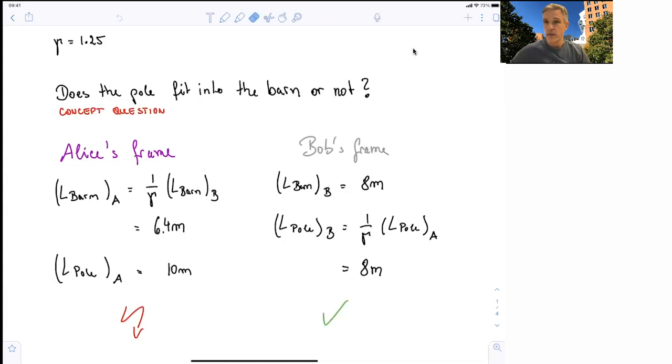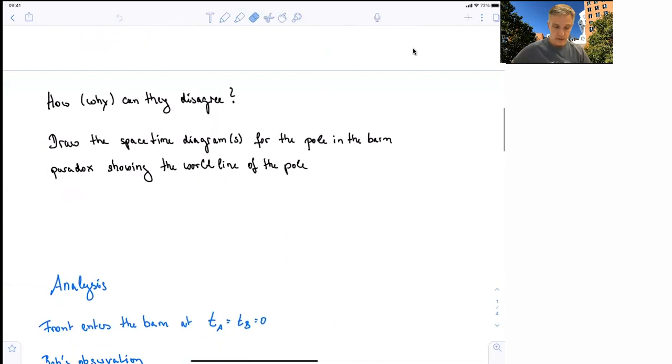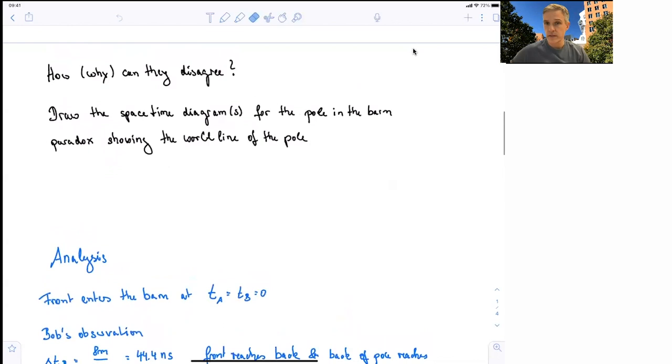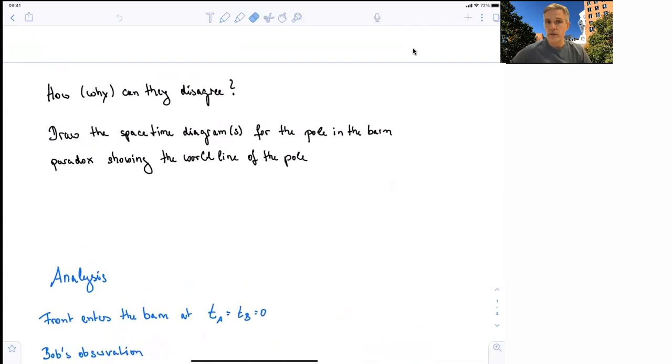They just disagree on the fact that events happen simultaneously. What are the crucial events here? When does the pole hit the end of the barn? And when does the back of the pole hit the front of the barn? Those are the two things we have to study in detail. But let's get to it. How can they or why can they disagree? So the idea is that you draw space-time diagrams for the pole and the barn.